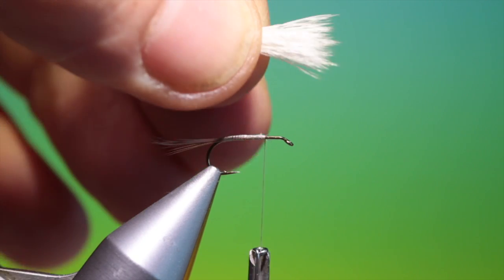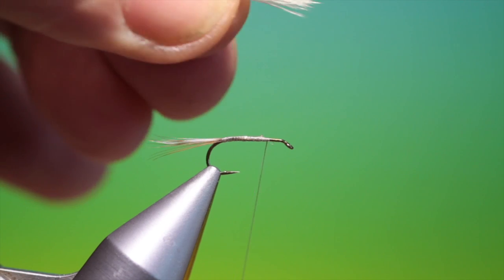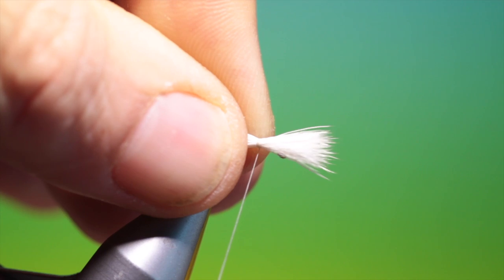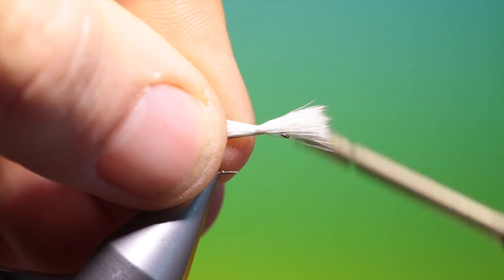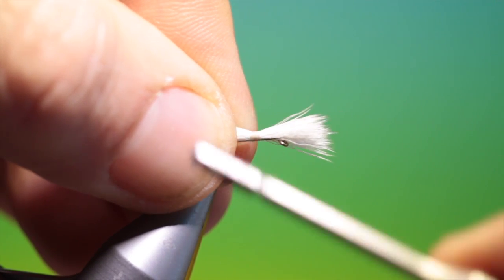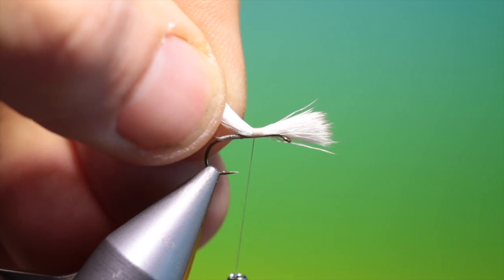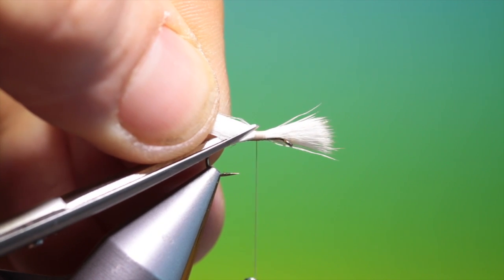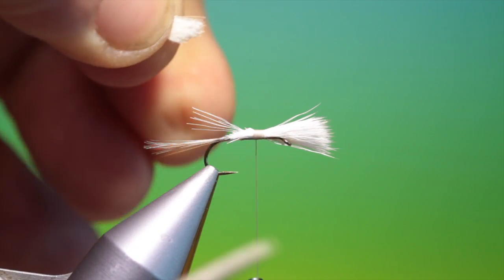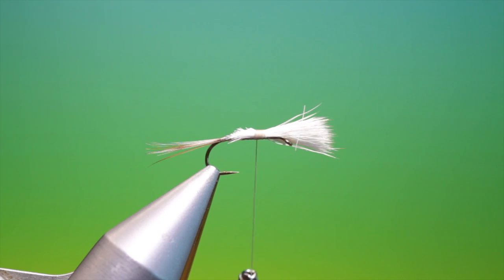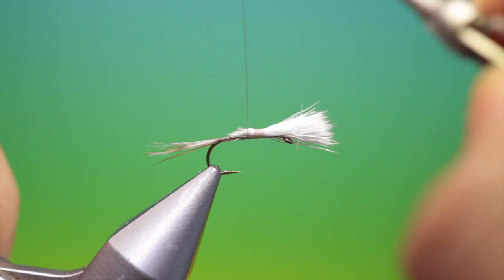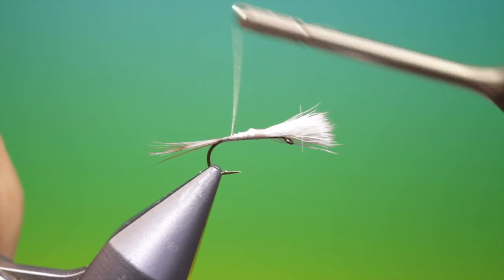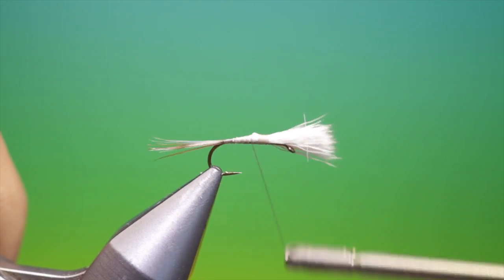And we need a little bunch of white calf tail cleaned and stacked. And we'll just tie that in for the post. Go back a few turns. And then we can trim this off at a long angle. Oops, missed a few. There we go. And we'll just go over that so we get the tapered body. And then back up.